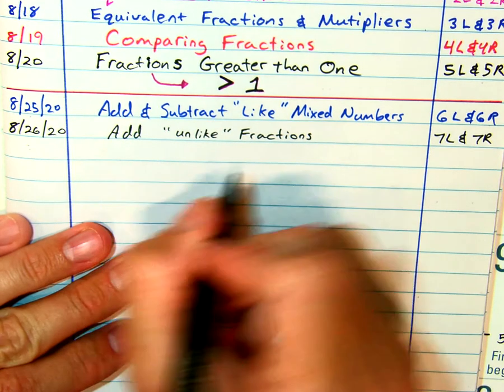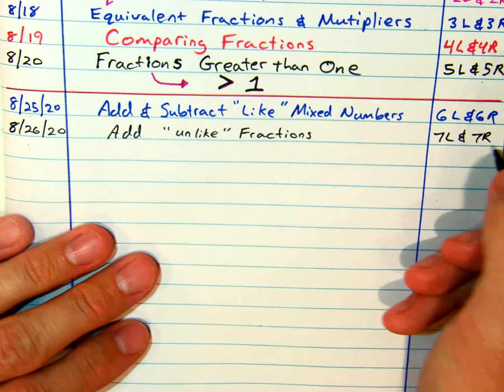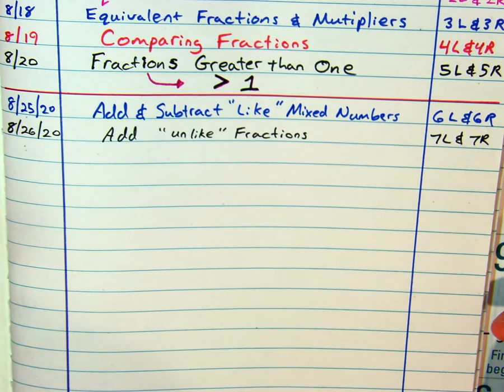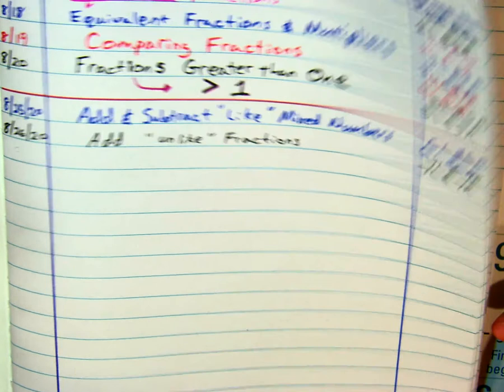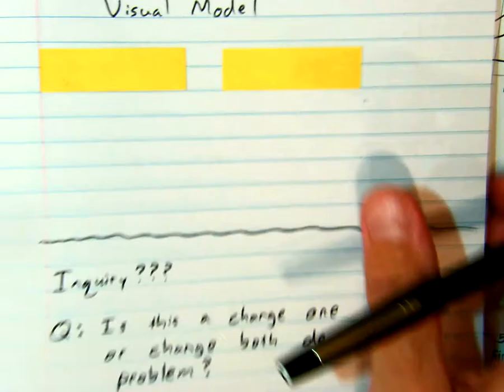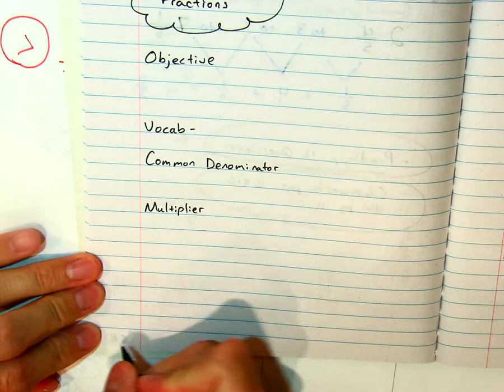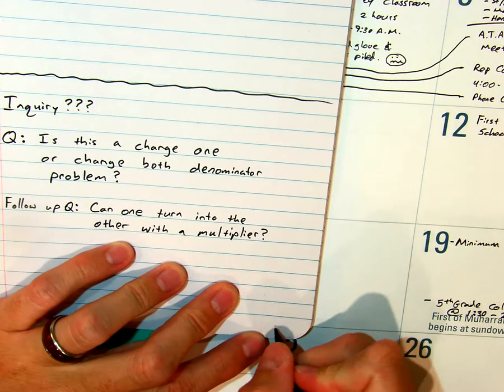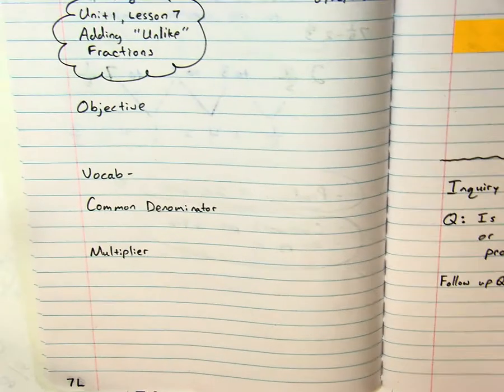Excellent. Our notebook page will be 7L and 7R. I promise today will be much shorter than yesterday. Pause if you need to get that title in. Otherwise, I'm moving on. I'm framing these out just so I'm ready to video. Let's go ahead and put our page number in the left, 7L. Go to the right. Let's do 7R.